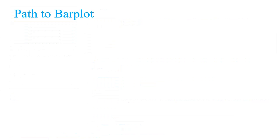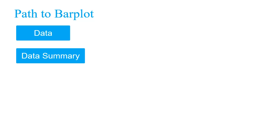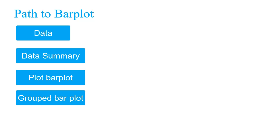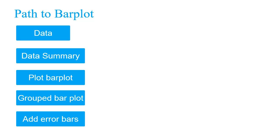To get bar plots with error bars, we need to have data first, then the data will be summarized to get mean and standard deviation values or standard error values. Then we will plot the bar plot and make it stacked or grouped — by default it will be a stacked bar plot. Then we will add error bars, then labels, and then legend.